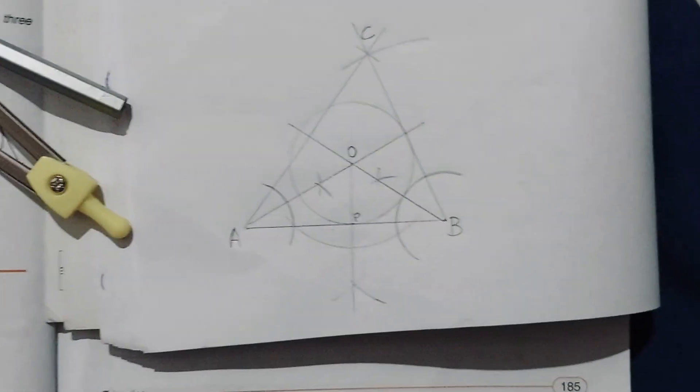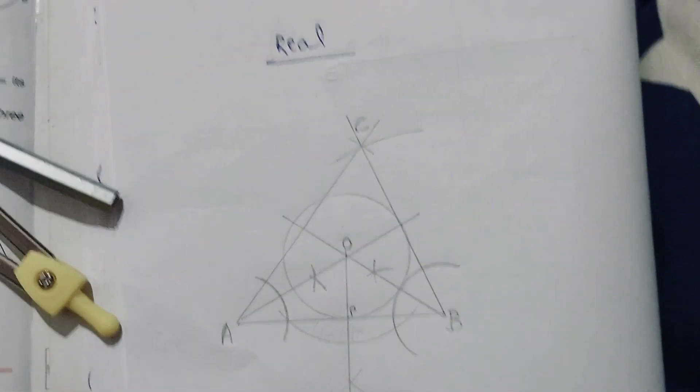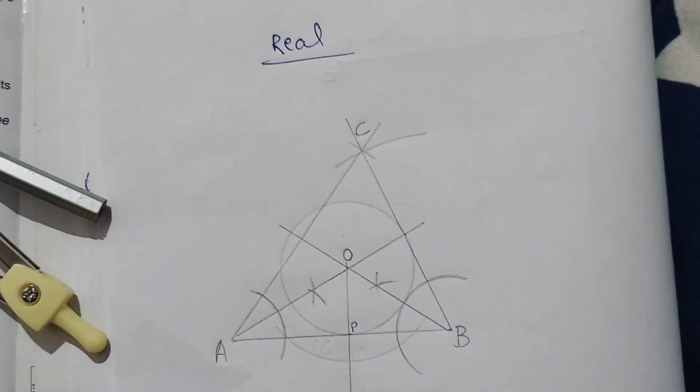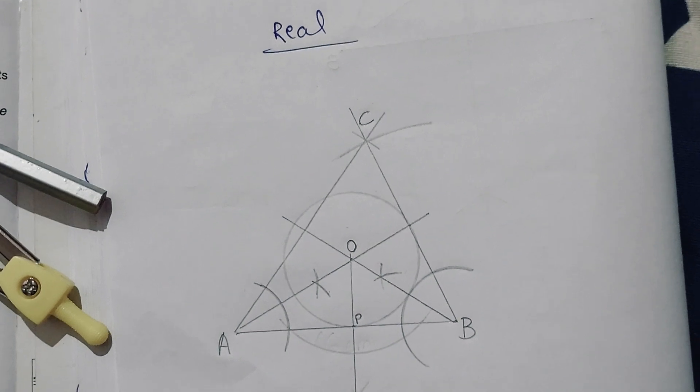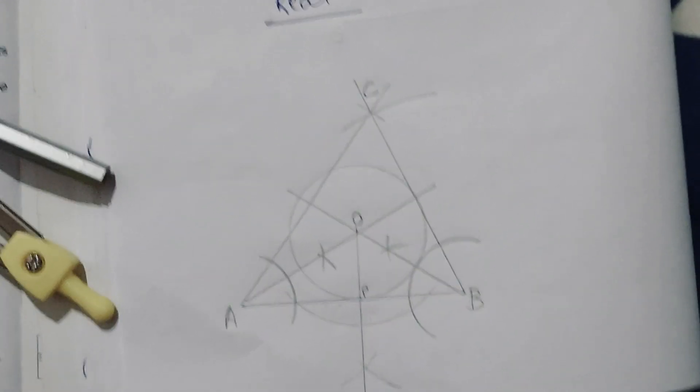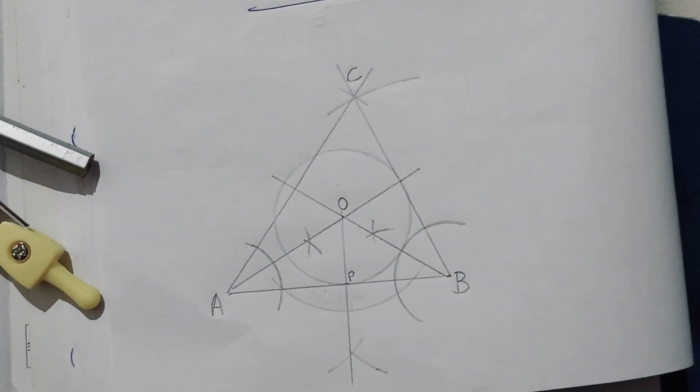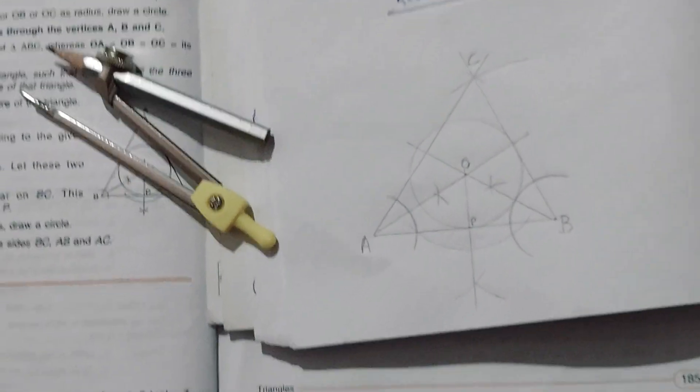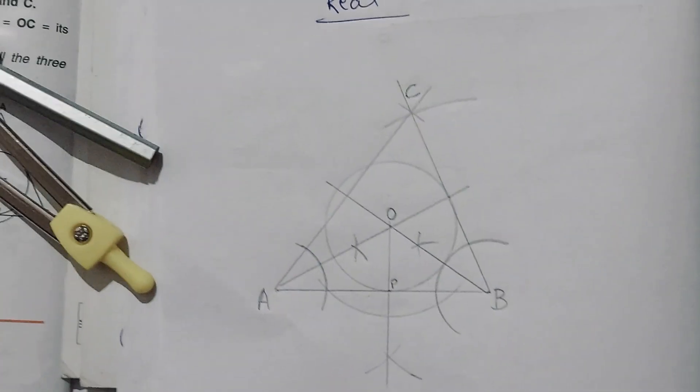The circle may not be perfectly drawn here because the lines were not drawn precisely — make sure you draw the lines properly and the result will surely come out correctly. The procedure is correct. Thank you for watching, and if you liked the video, please like, share, and subscribe to my channel.